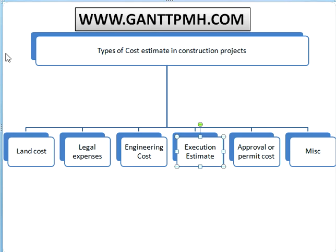In equipment, we include JCB, hydro machines, bulldozers, and rollers. In materials, we include concrete, steel, internal items, doors, windows, and so on.